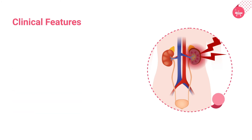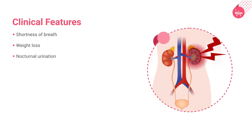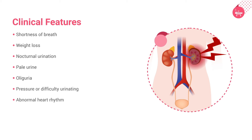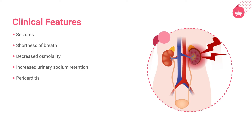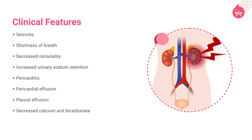The symptoms of uremia include bleeding tendencies, shortness of breath if volume overload is present, weight loss, nocturnal urination, pale urine, oliguria, pressure or difficulty urinating, abnormal heart rhythm, and muscle paralysis. Other less common symptoms include seizures if blood urea is very high, decreased osmolality, increased urinary sodium retention, pericarditis, pericardial effusion, pleural effusion, decreased calcium and bicarbonate, and defects in platelet functioning.